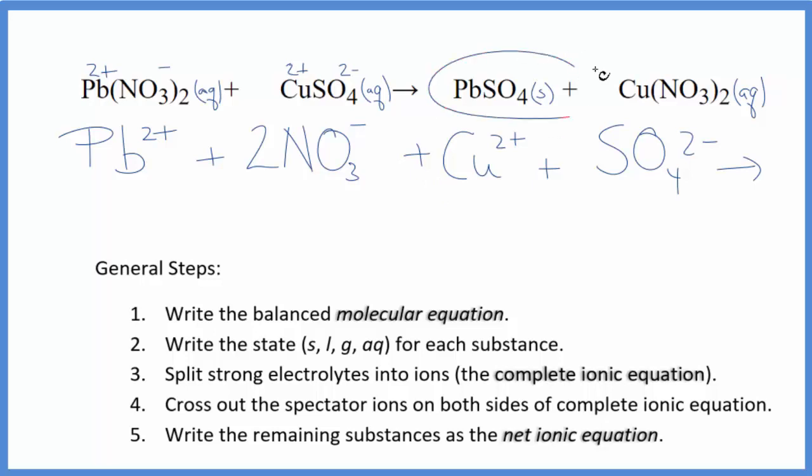For the products, we don't split solids apart, so we just write PbSO4. For the copper 2 nitrate, we know we have a negative charge here, since we have two of these. We have to have it 2 plus. This will be Cu2 plus, that's the copper ion. Then we have two nitrate ions, just like in the reactants.